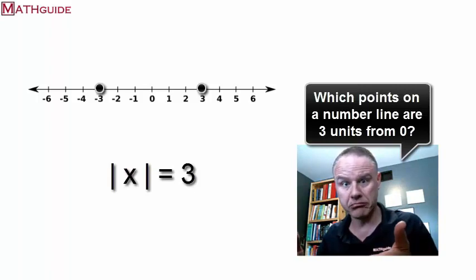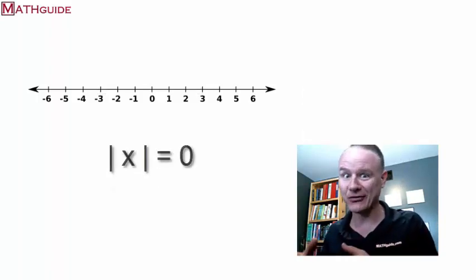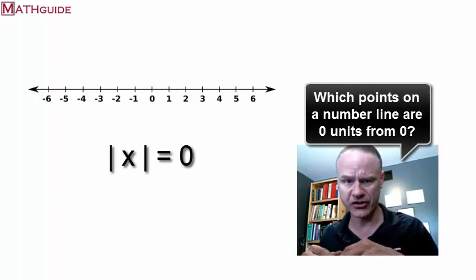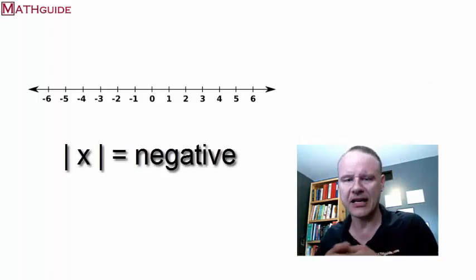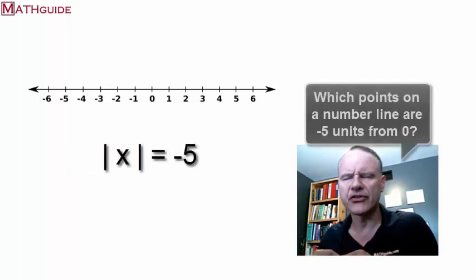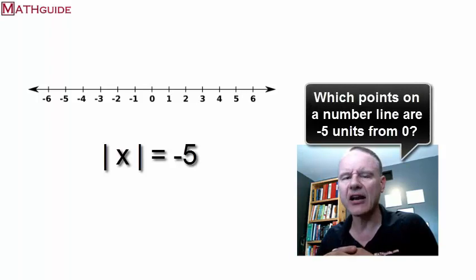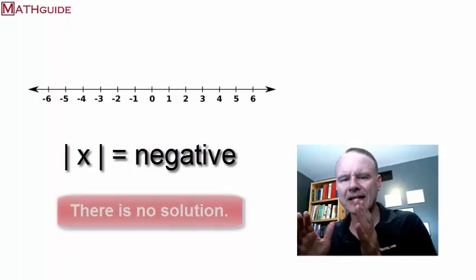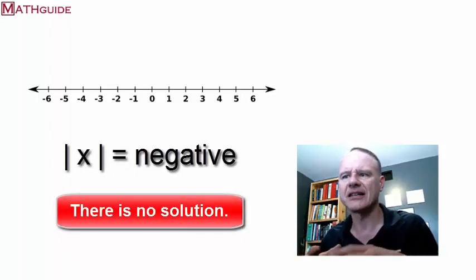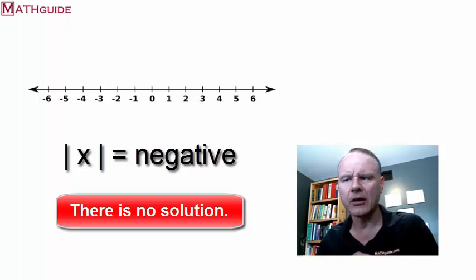This works for nearly everything except the absolute value of zero — you're asking which points on the number line are zero units away, and that's just zero, one solution. And watch out for the tricky one: the absolute value of some value x equal to negative five. What points on the number line are negative five units away? You can't have a negative distance. So when the absolute value of a quantity equals a negative, there is no solution.